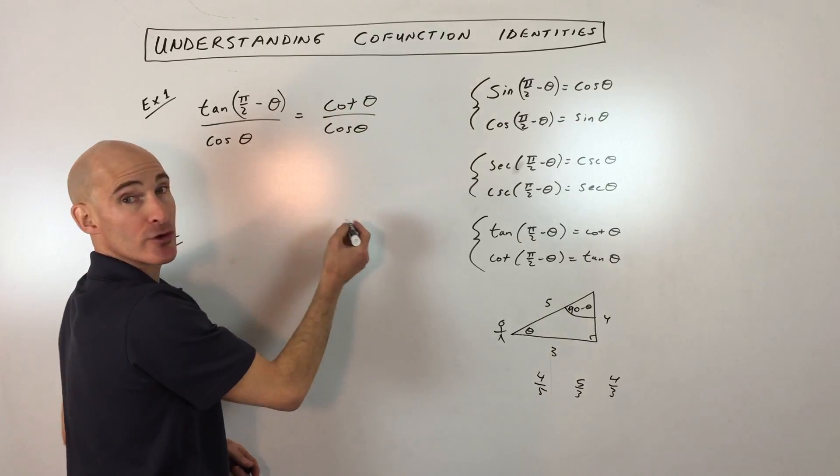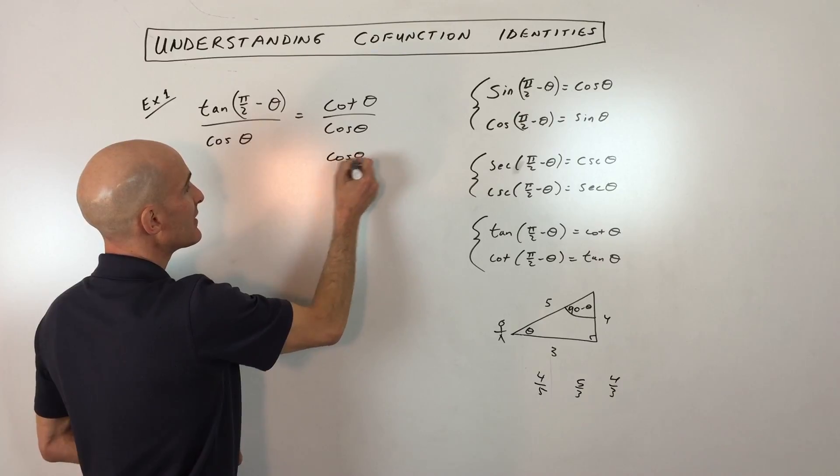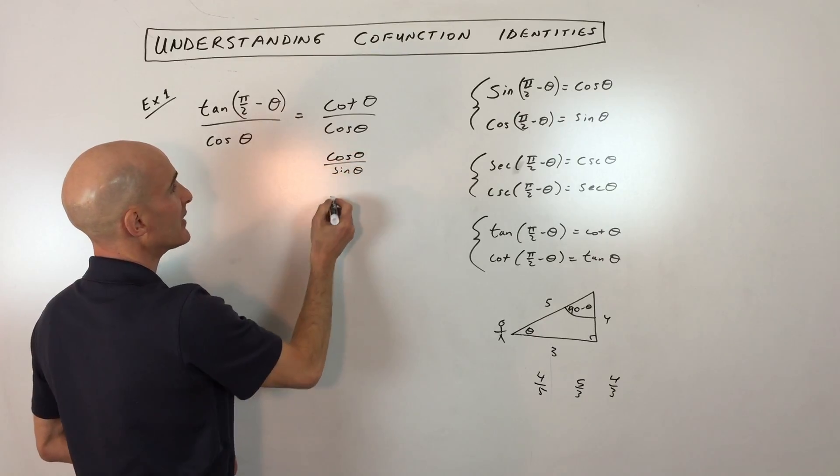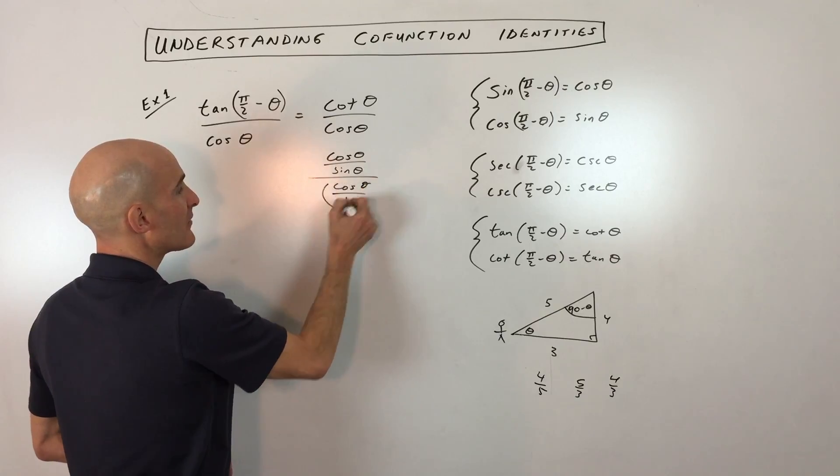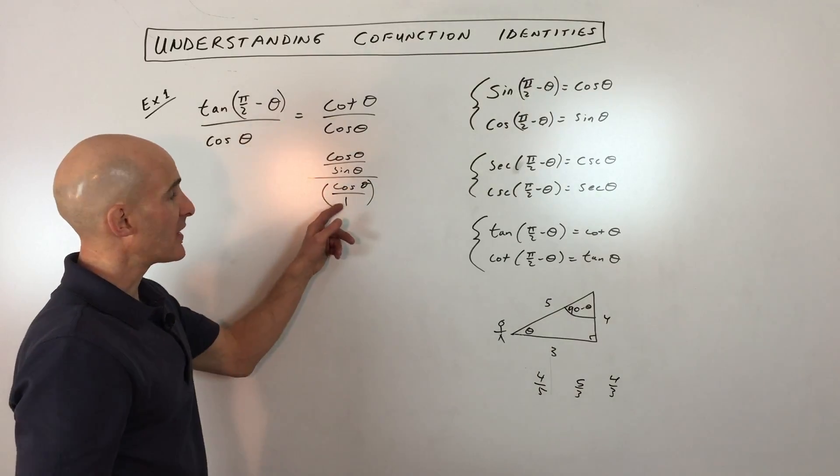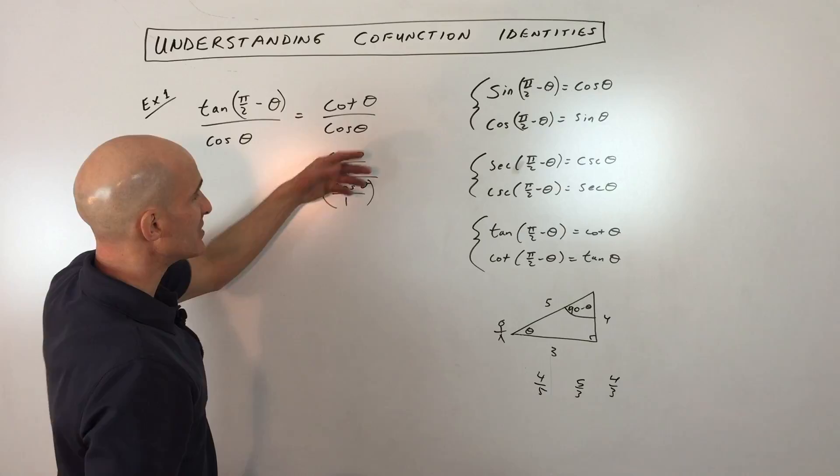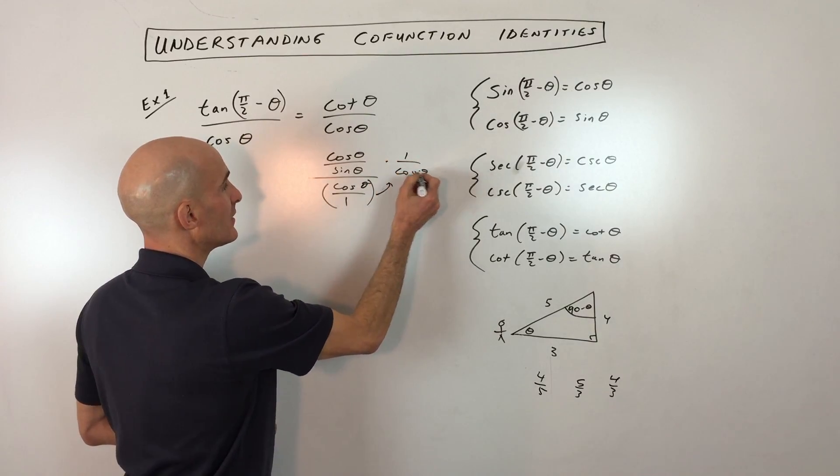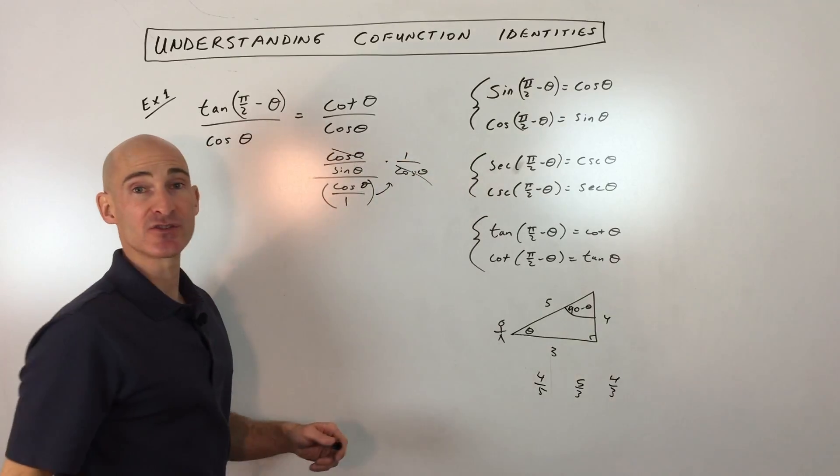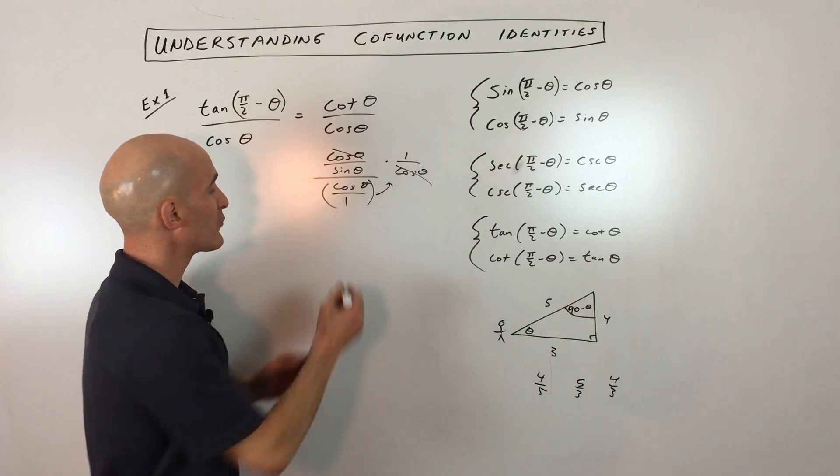Now you probably remember from earlier that cotangent of theta is cosine of theta divided by the sine of theta, all divided by this cosine of theta here, anything divided by one is itself. So I can write that over one. Now when you divide by a fraction, it's like multiplying by the reciprocal. So this is like multiplying by one over cosine theta. And you can see the cosine thetas cancel numerator and denominator, and you're left with one over sine.